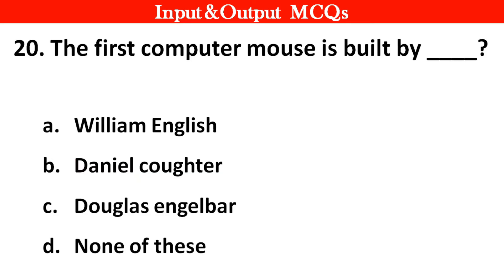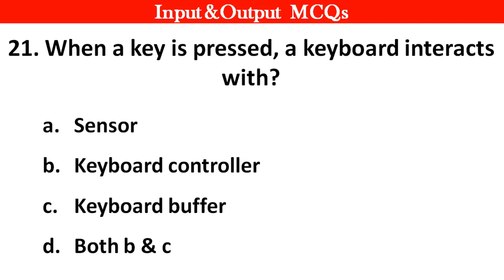Next question. The first computer mouse was built by dash. Right answer is option B: Pointing device. Next question. When a key is pressed, a keyboard interacts with: A. Sensor, B. Keyboard's controller, C. Keyboard's buffer, D. Both B and C. Right answer is option D: Both B and C.